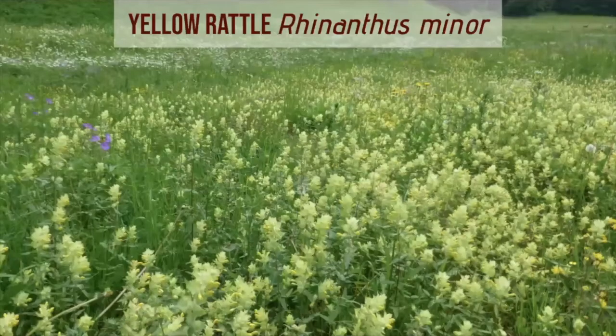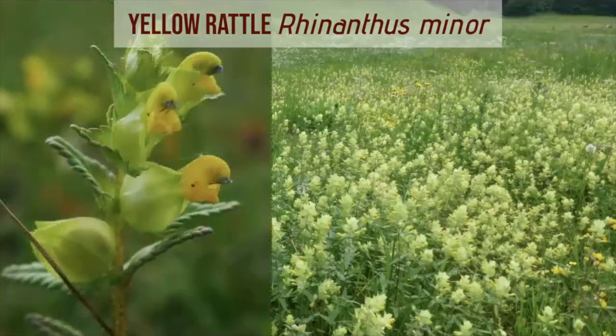Taxonomists have expanded the broomrape family to include partially parasitic hemiparasitic genera which were formerly included in the figwort family. Yellow rattles are one such group of plants — generally plants of grasslands and meadows — and they attach themselves to the roots of grasses. As you can see, their leaves are green but they often appear reddish or purple depending on the amount of chlorophyll they contain.